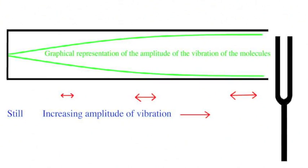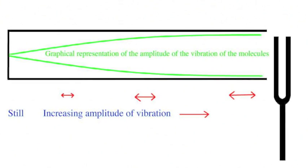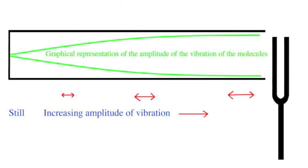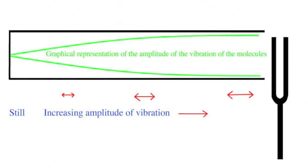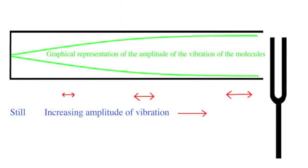Remind yourself that sound is a longitudinal wave. The motion of the molecules is up and down the tube. The green line is a representation of the amplitude of the movement, but it is not across the tube as the line seems to suggest at first glance.